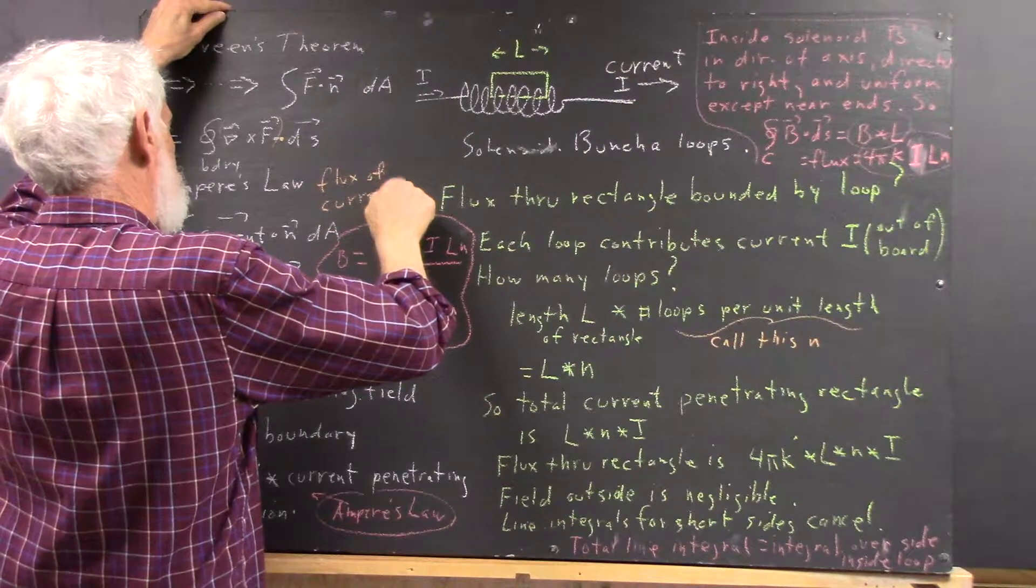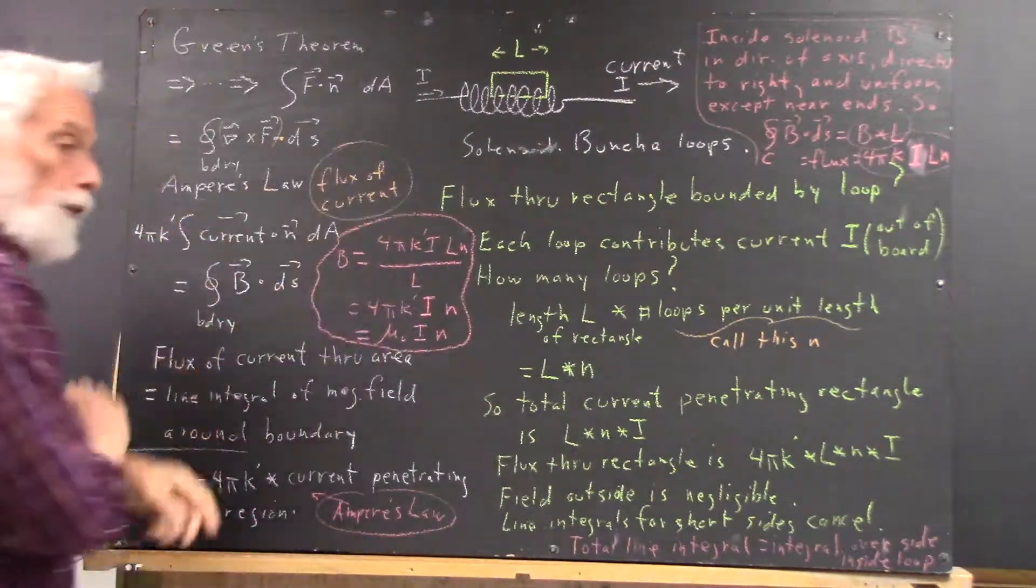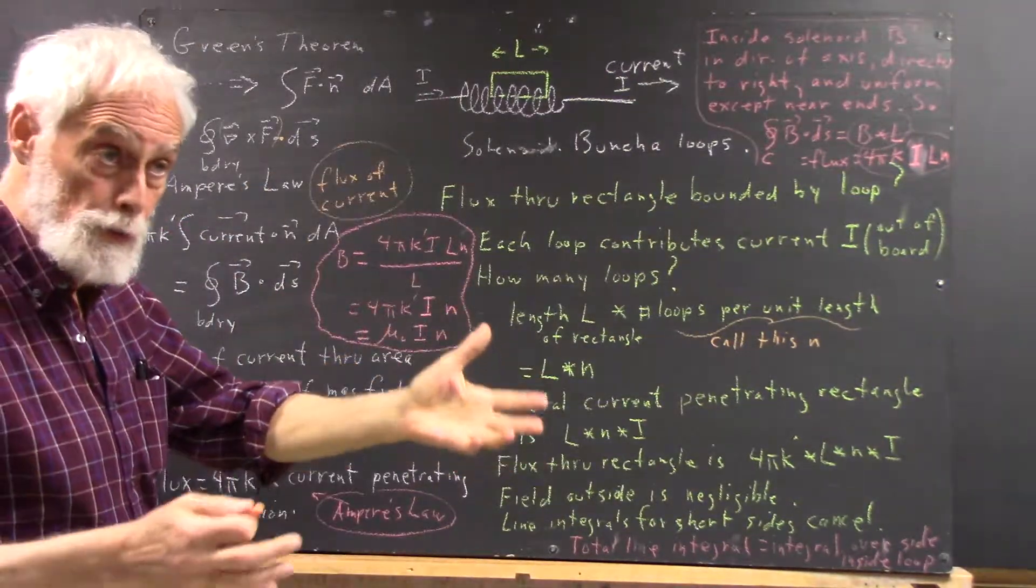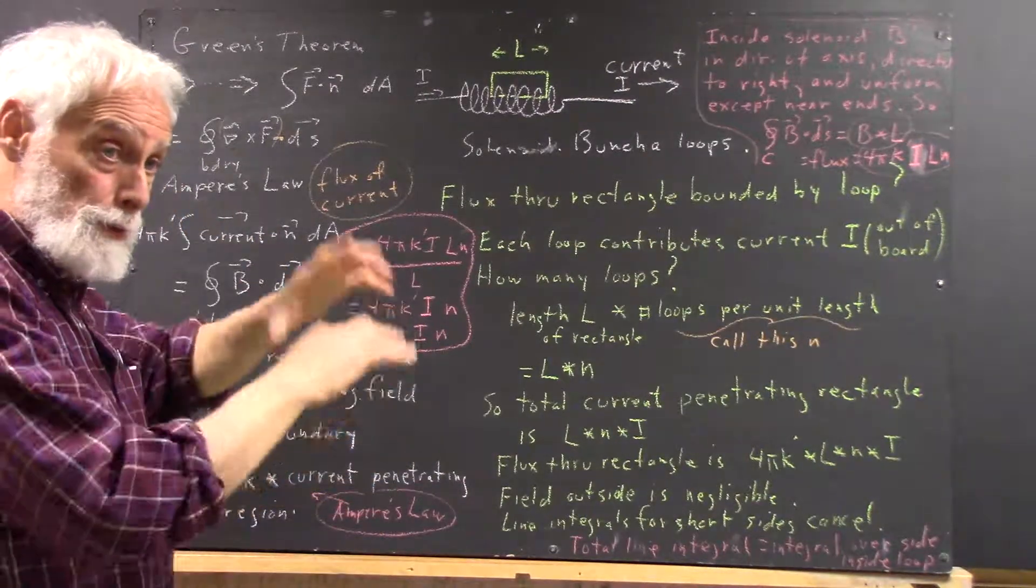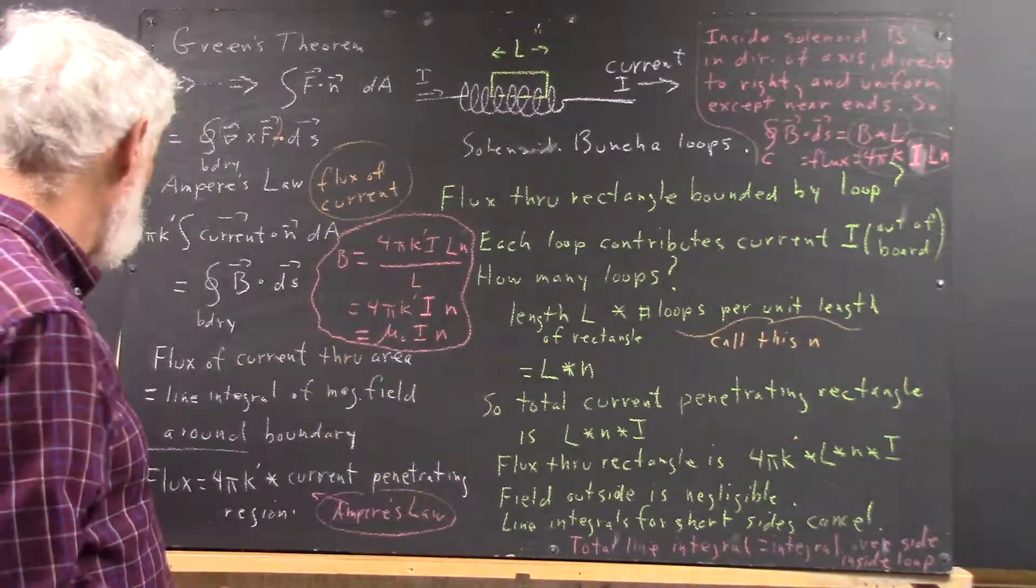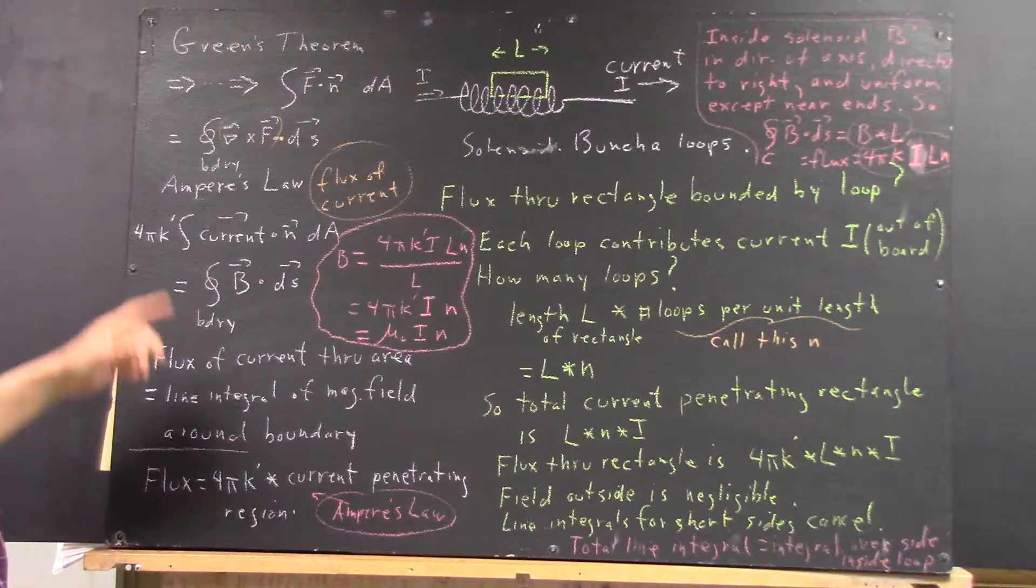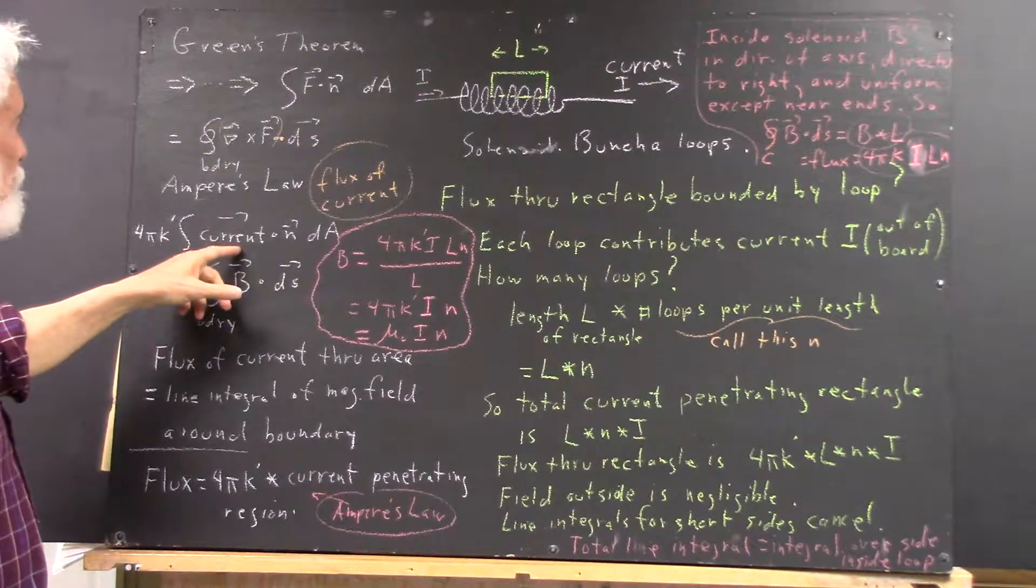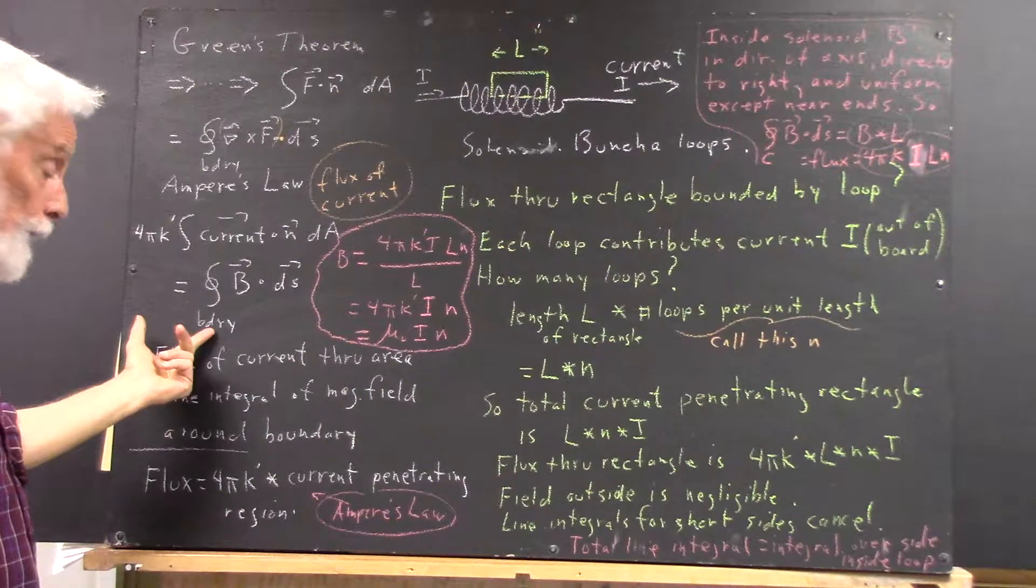And think of this analogously with the 4πk cube that you use for Gauss's Law. 4πk times the total charge enclosed, etc. So this is 4πk' times the current enclosed by some boundary.